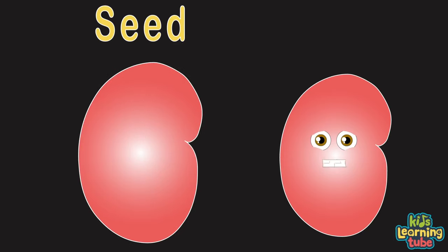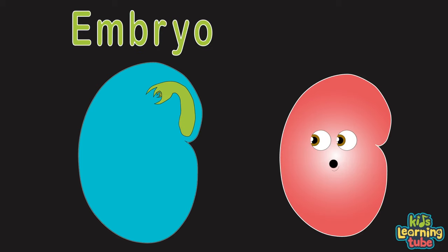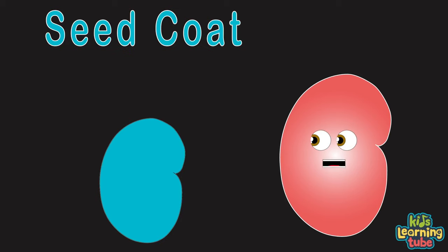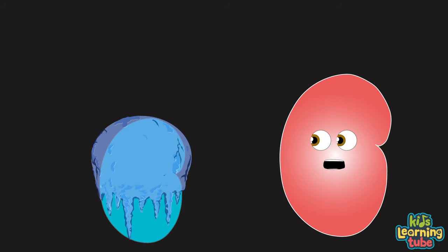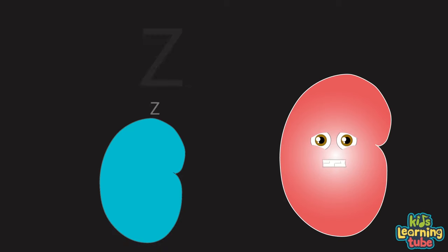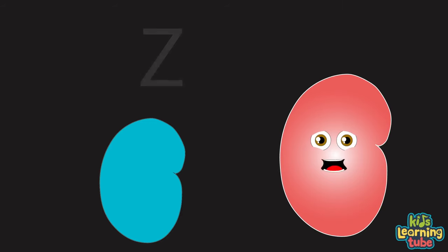A seed is an embryonic plant enclosed in a protective outer shell. There are three parts of the seed: the seed coat, the embryo or tiny plant, and the endosperm which is the food for the embryo. The seed coat protects the seed from physical harm and from temperature change or water damage. It also keeps the seed dormant — like it's in a deep sleep — by not letting the embryo have access to water or air.